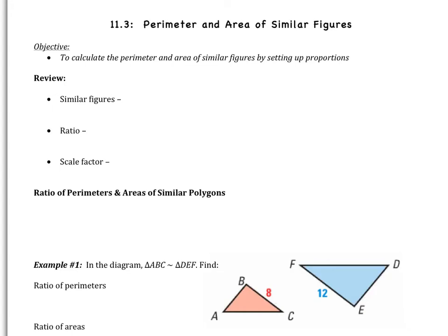Welcome to the third video of Chapter 11, which is Perimeter and Area of Similar Figures. There's one objective for today's video: to calculate the perimeter and area of similar figures by setting up proportions. This is by far the most difficult section in the chapter. It's not confusing once you get the concepts down, but it's very important that you pay attention, take notes, and write down any questions you may have.